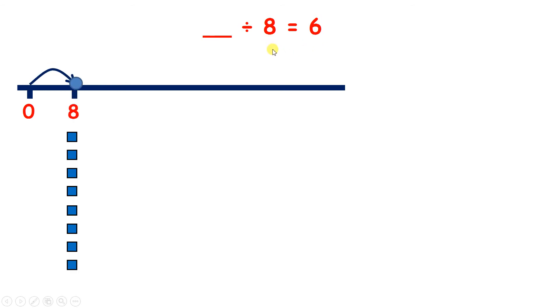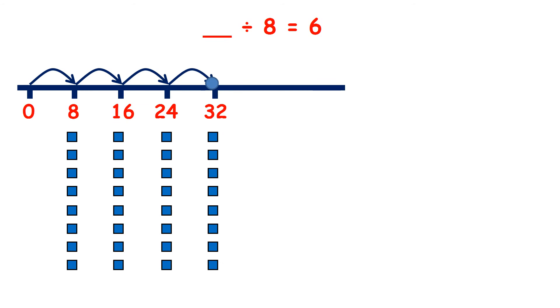8, 16, 24, 32, 40, 48. So we have 6 groups of 8, and we've made 48. So 48 divided by 8 is 6.